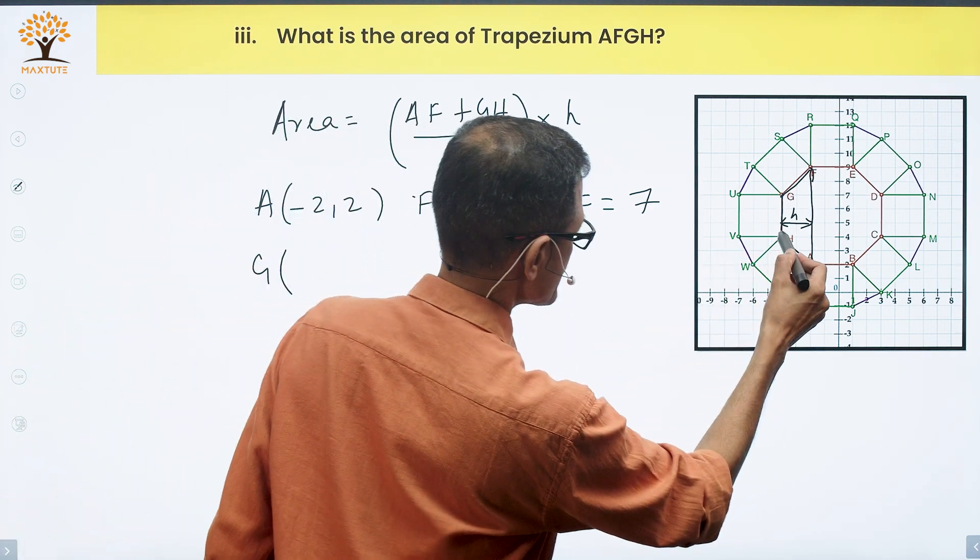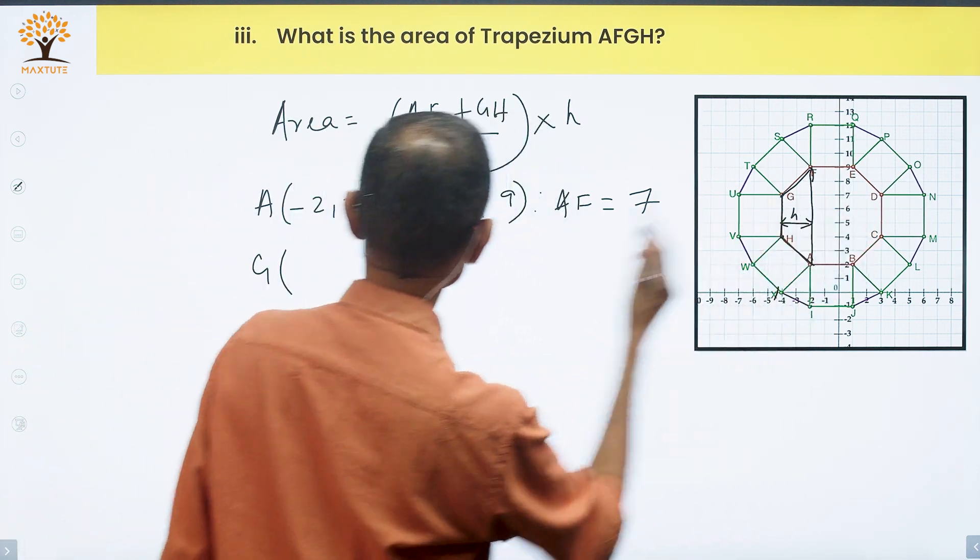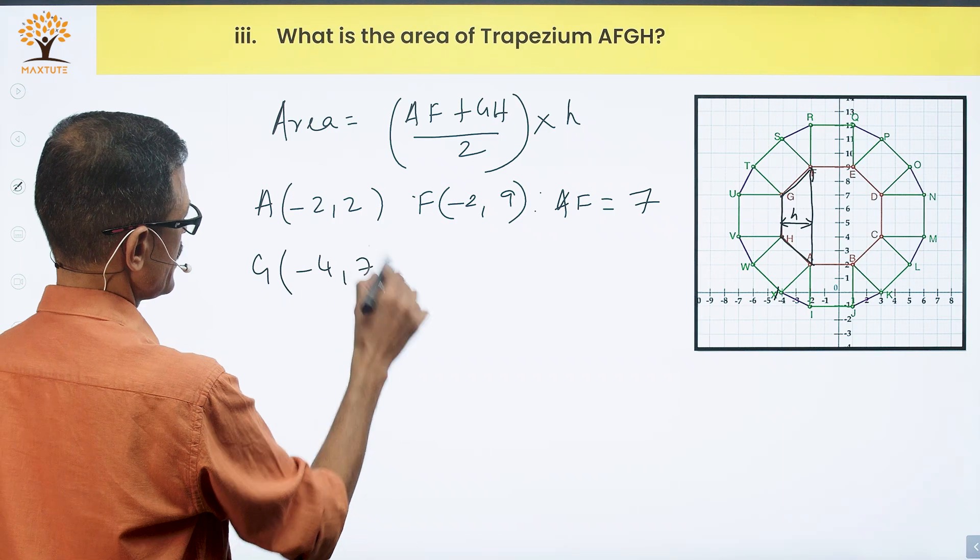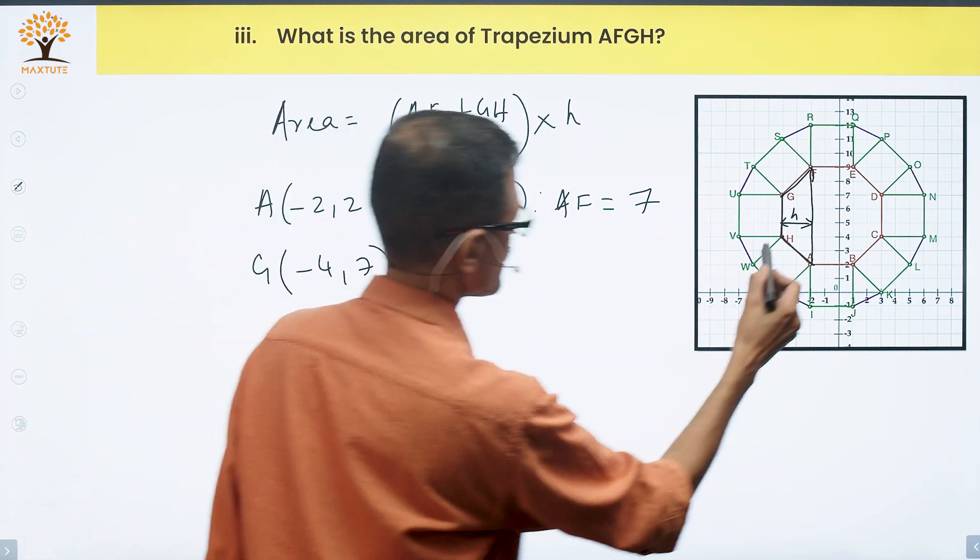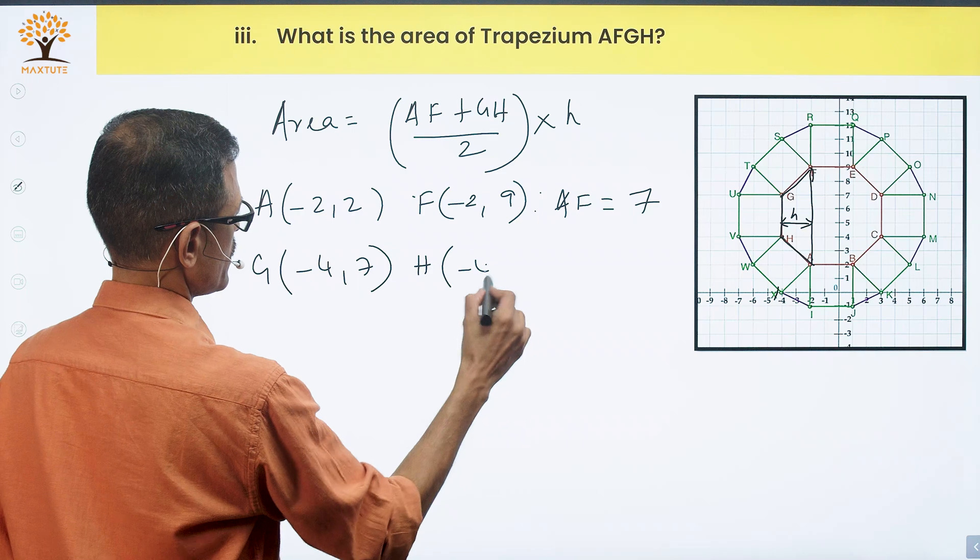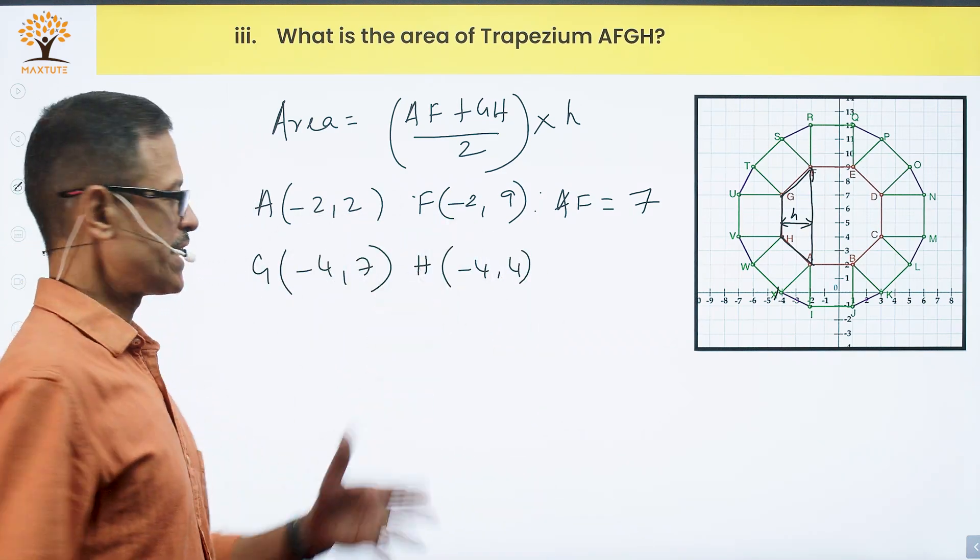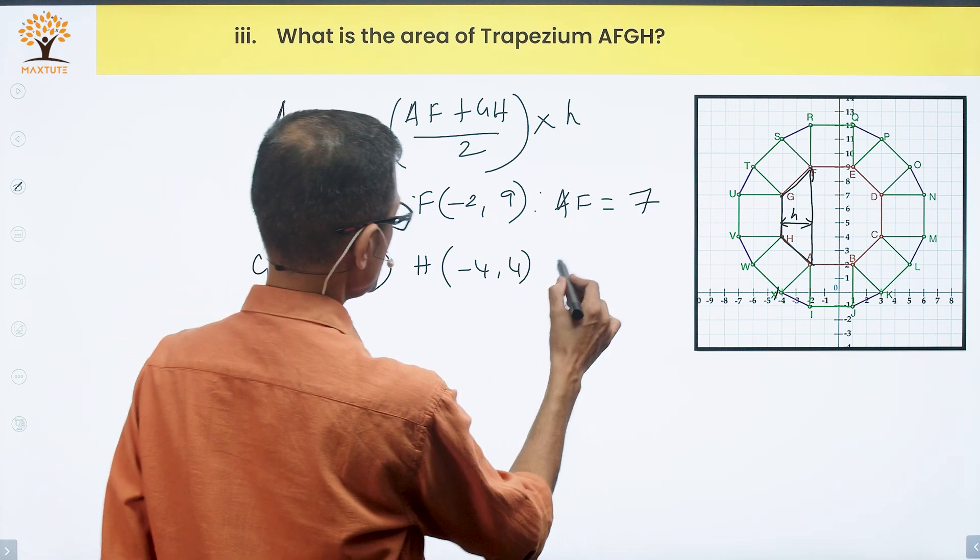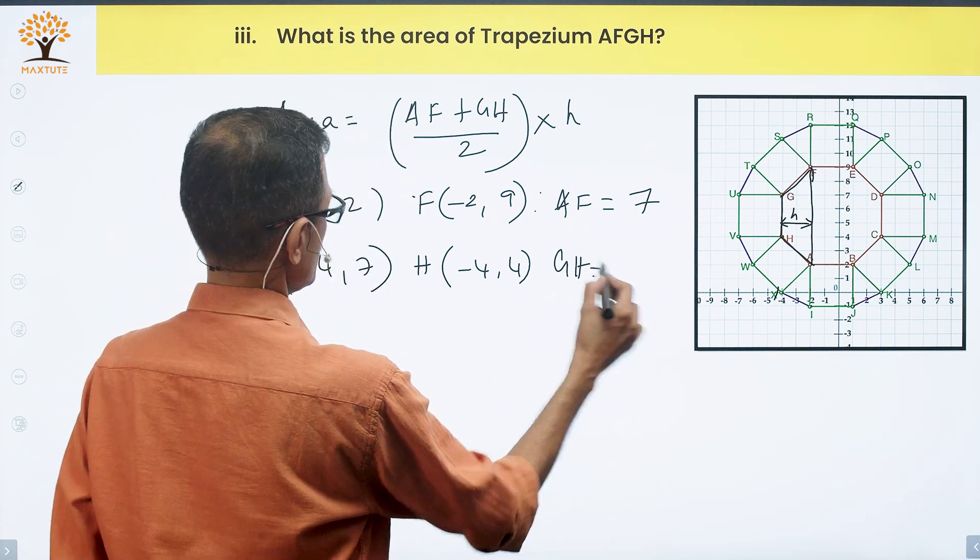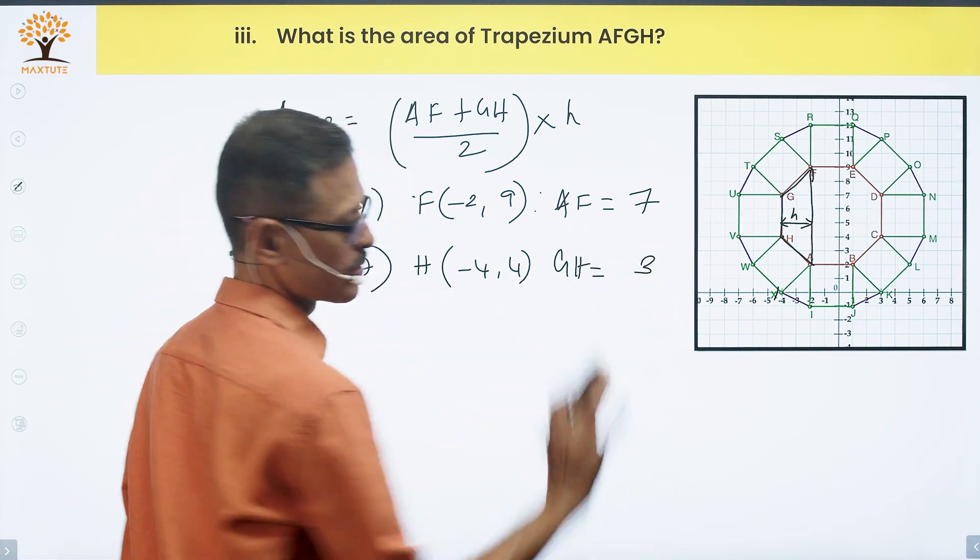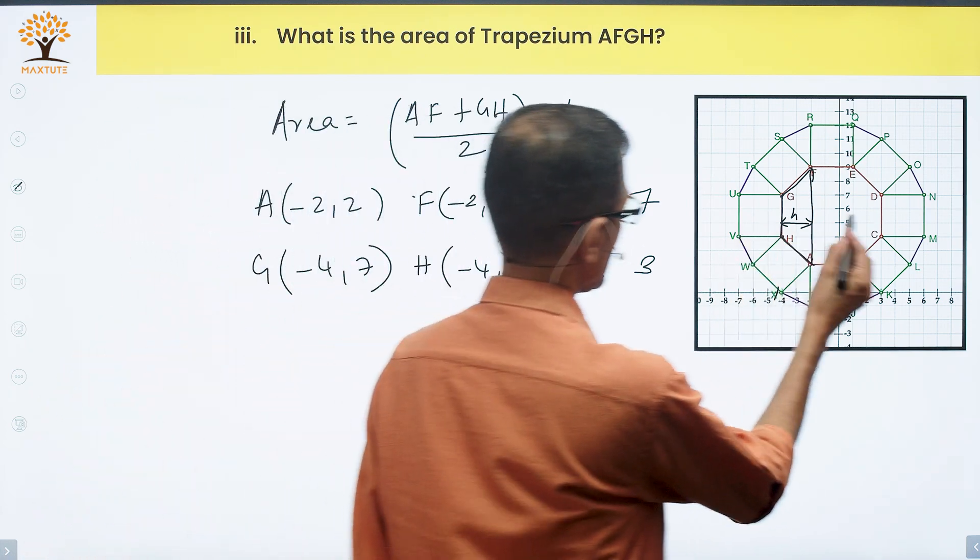G coordinates: X-coordinate is minus 4, comma 7. The coordinates of point H are the same minus 4 and 4. X-coordinate will be same for A and F, and same for G and H. Therefore, the distance GH equals 7 minus 4, which equals 3.